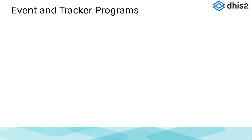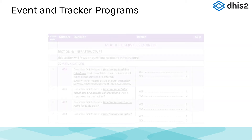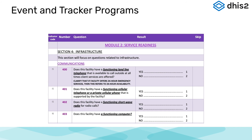There are two types of individual-based data models available in DHIS2: event programs and tracker programs. Event programs are anonymous individual events where no person or entity is tracked. For example, survey data, a surveillance line listing, or a facility needs assessment like this service availability and readiness assessment developed by WHO.